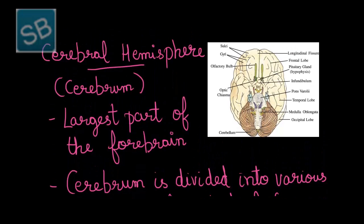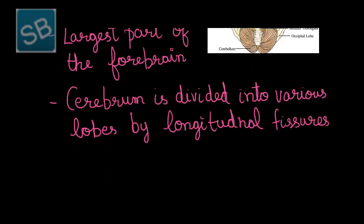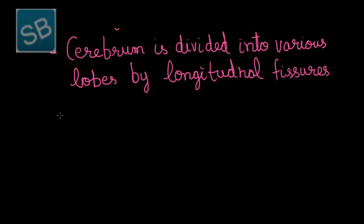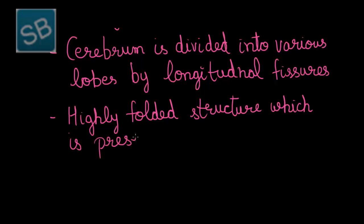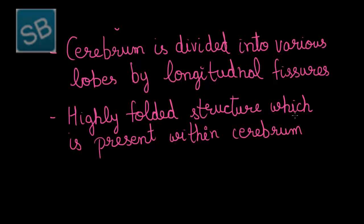As seen from this figure, there are deep folding ridge structures known as gyri, and the depression between them is known as sulci. Structures like gyri and sulci form the most important part of the cerebrum and help in the division of its lobes. The highly folded structures present within the cerebrum are called gyri.